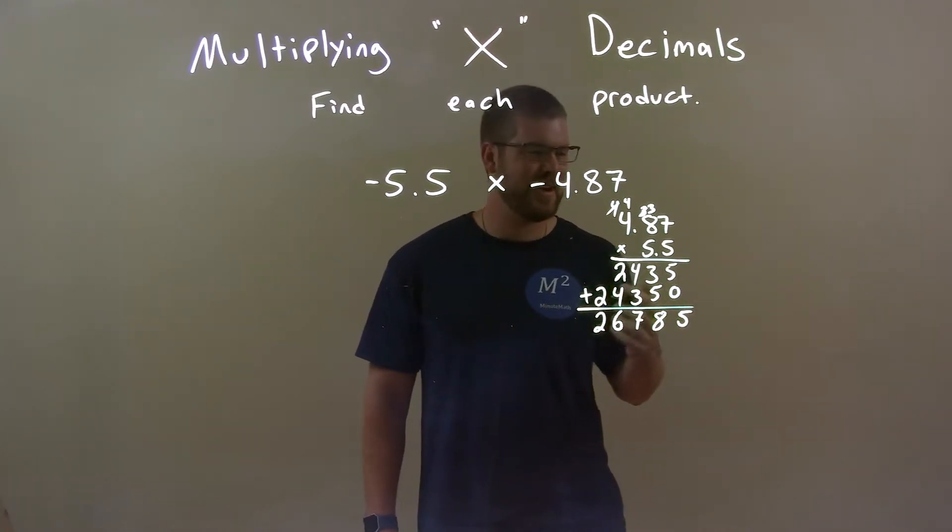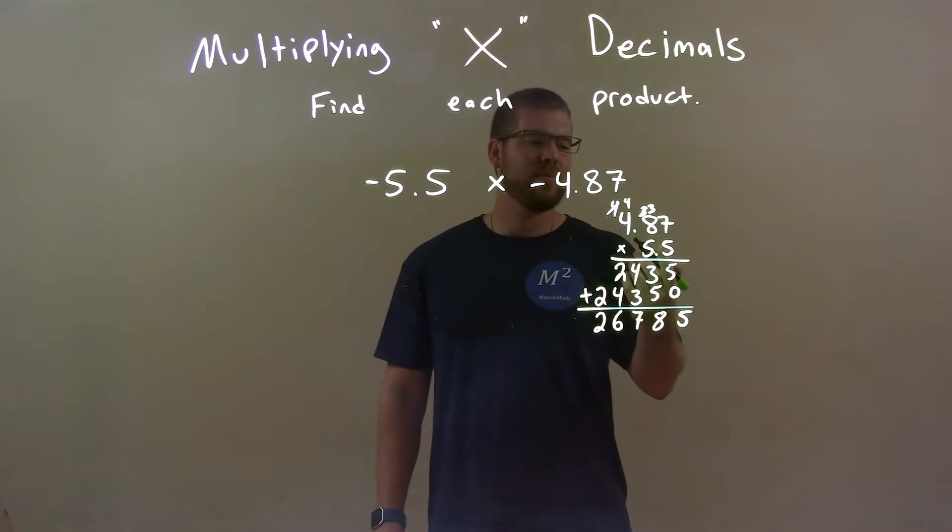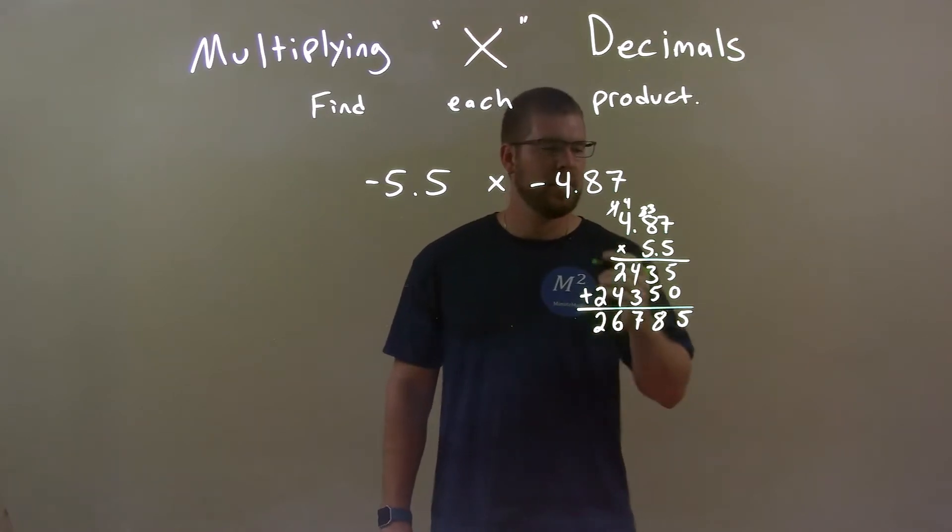That's not our final answer, right? It wouldn't make sense. A number just bigger than 5, or halfway at 5.5, times a number close to 5 isn't that large. Alright? So, we look at the decimals.